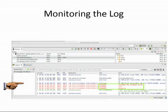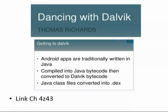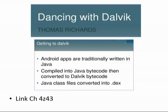In the projects, we put something in the log like stealing a username and password. You can put in Trojan code, read the logic and find encryption keys and methods, modify games, change variables to give yourself different options, and defeat client-side validation. Thomas Richards gave some very nice talks showing how easy this was, which inspired me to go hack all the financial apps — which was really very easy.